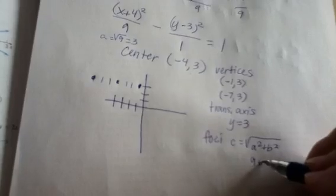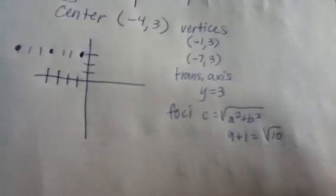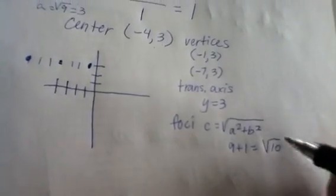So a² is 9 and b² is 1. So we have 9 plus 1 is the square root of 10, which is 3 point something, just barely over 3. And we can't simplify that square root at all.